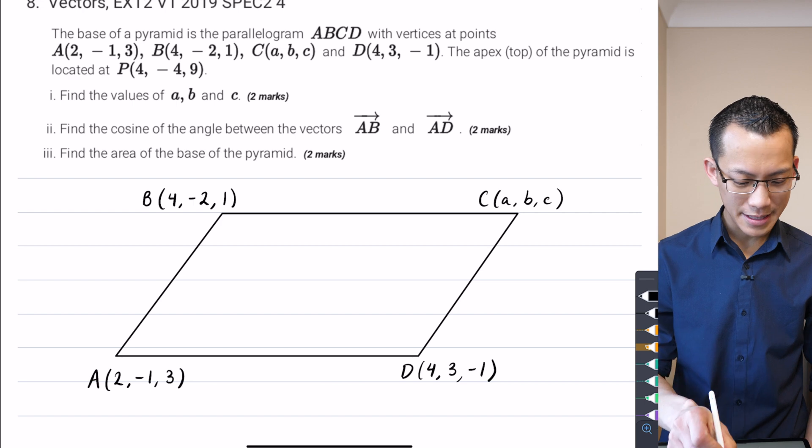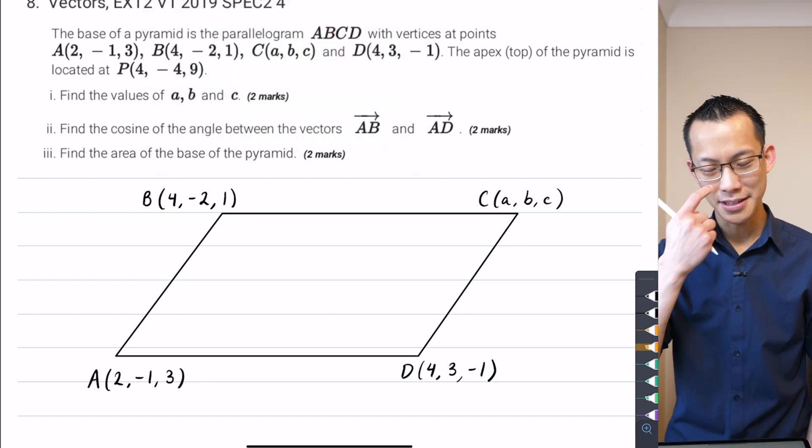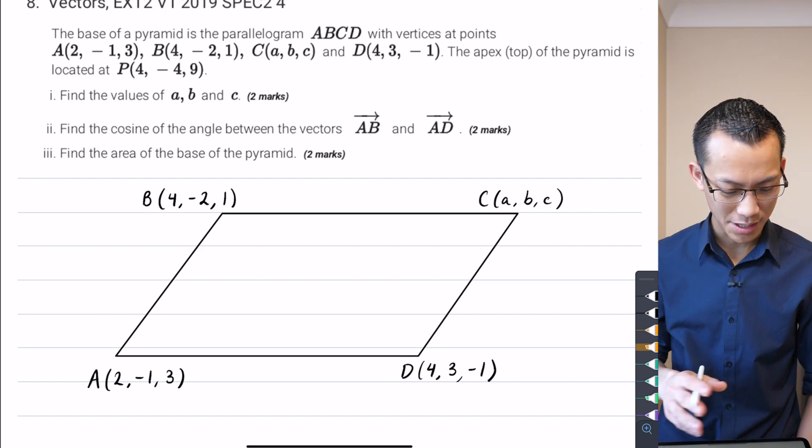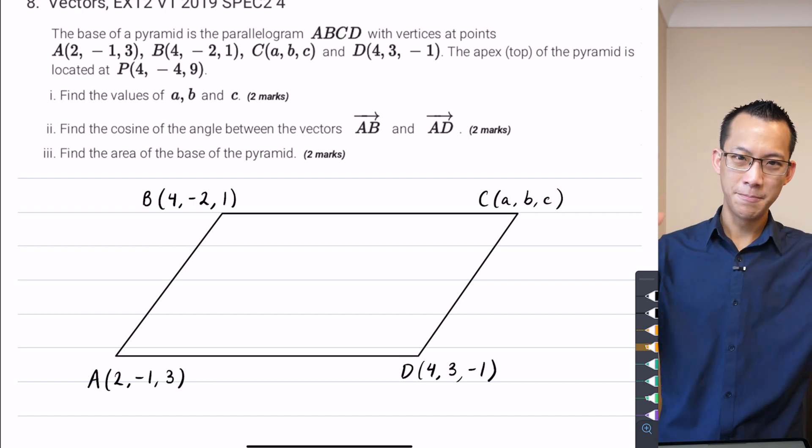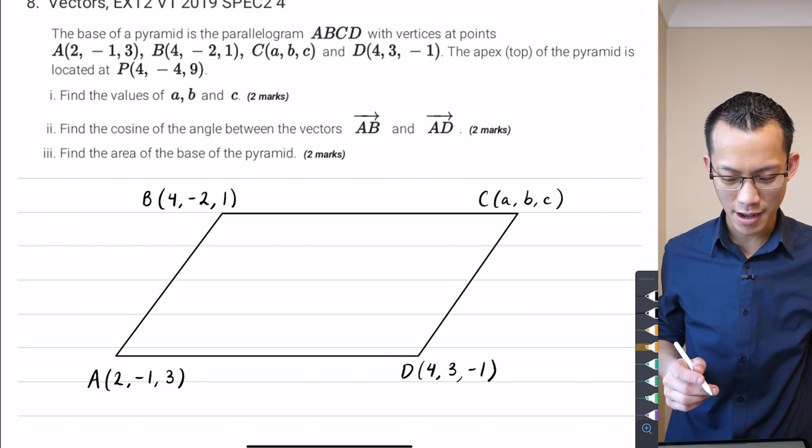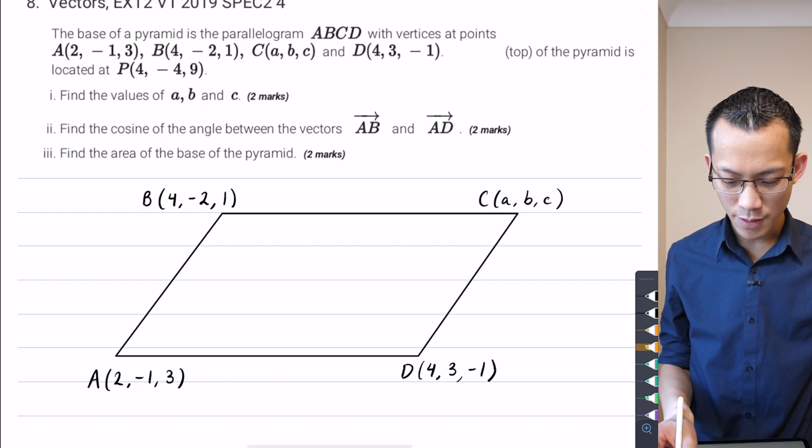maybe you will realize that actually you never need to refer to the apex, at least in the question as stated, because they don't ask you anything about volume. They never ask you to find one of the upward-facing triangles or anything like that.